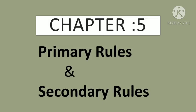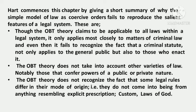Hart has explained 'orders backed by threat' and 'being obliged' very well. He also explained varieties of law — public power-conferring rules and private power-conferring rules. In the first four chapters of 'The Concept of Law,' Hart criticized Austin, but in Chapter 5, Hart gave his own theory of law. He titled this chapter 'A Fresh Start,' and it is the core of Hart's legal theory, introducing primary rules and secondary rules.